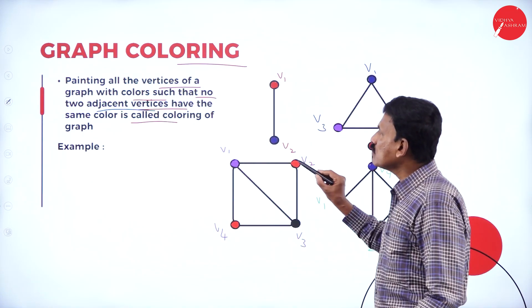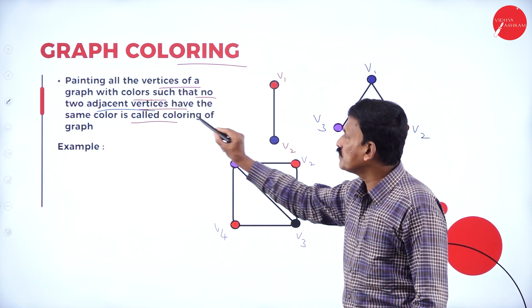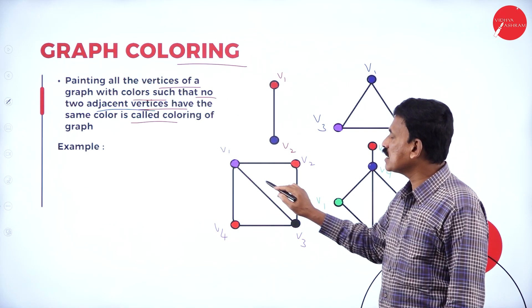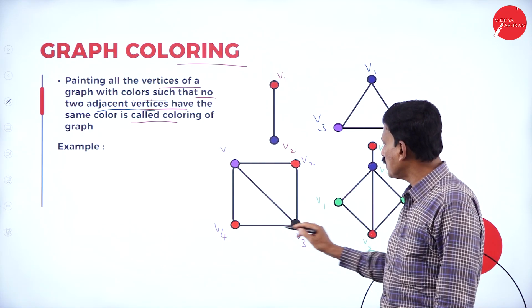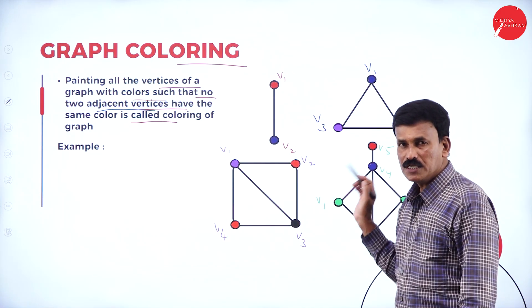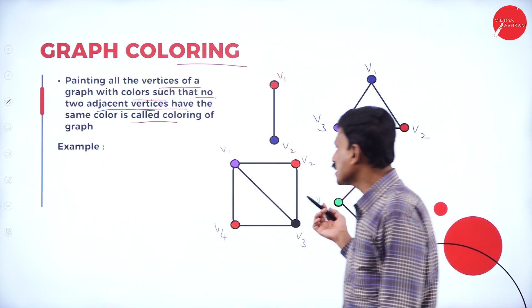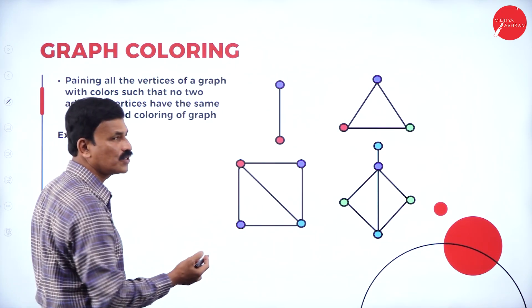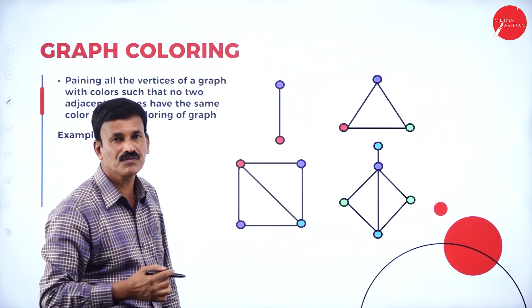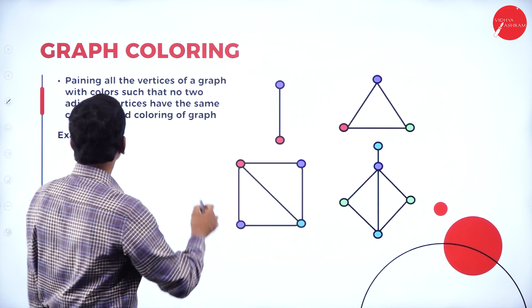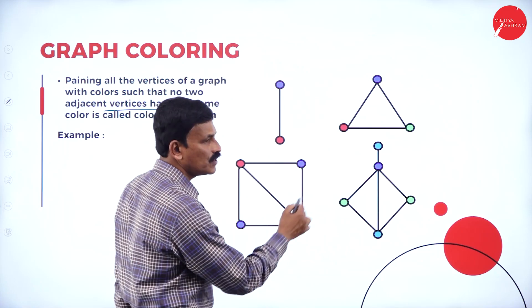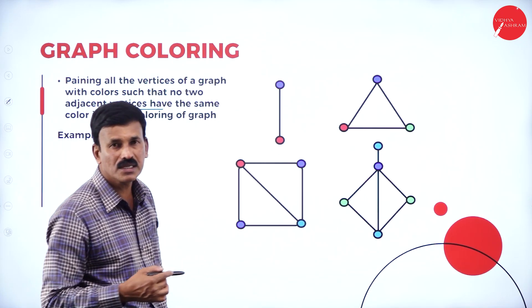So in summary, painting all the vertices of a graph with color such that no two adjacent vertices have the same color is called the coloring of a graph. No two adjacent vertices have the same colors — we represent each connected pair with different colors. This is called coloring of a graph.